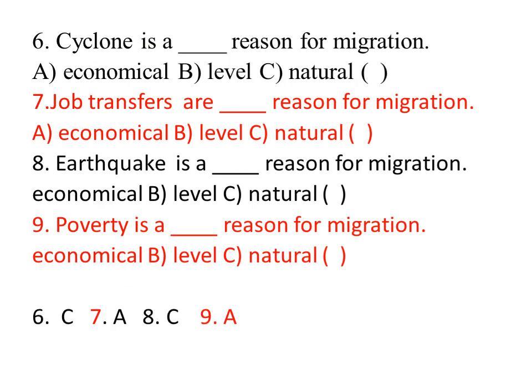Cyclone is a dash reason for migration. Options include economical reason and natural reason. Cyclone is a natural reason for migration. C is the right answer.